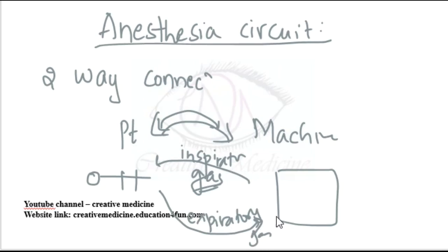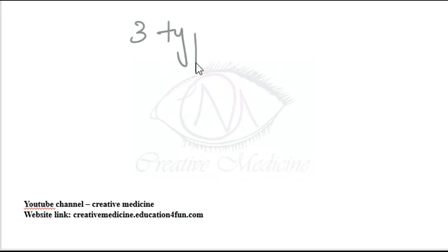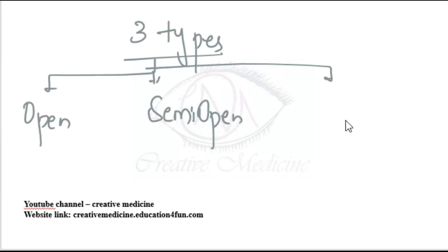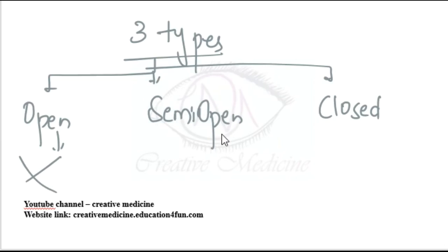There are three different types of anesthesia circuits available: first, the open circuit; second, the semi-open or Mapleson circuit; and third, the closed circuit. The open circuit is no longer used right now.